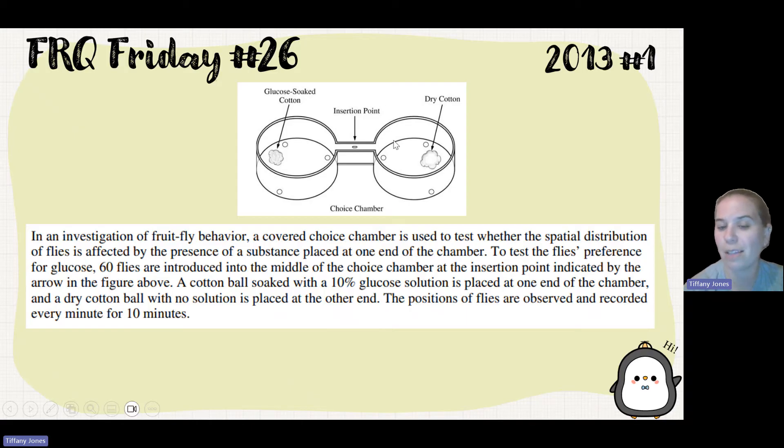A cotton ball soaked with 10% glucose solution is placed at one end of the chamber, and a dry cotton ball with no solution is placed at the other end. The positions of flies are observed and recorded every minute for 10 minutes.